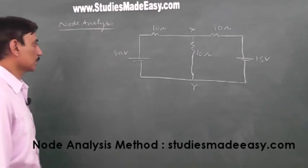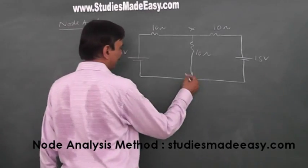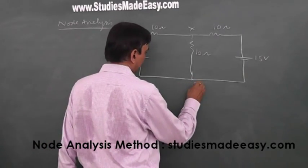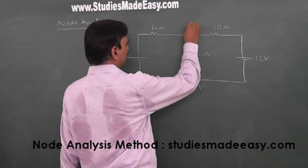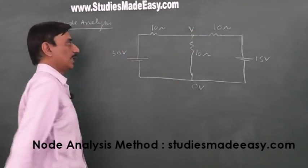So what does node analysis method say is, this node I take it as any potential, let's say I take it as 0 volt and I consider this as V volt, potential of this as V.